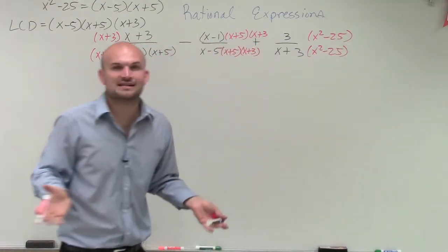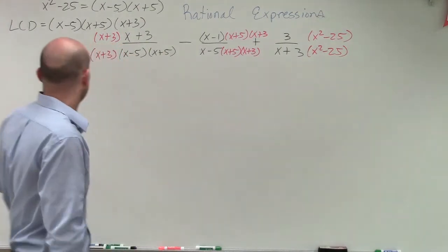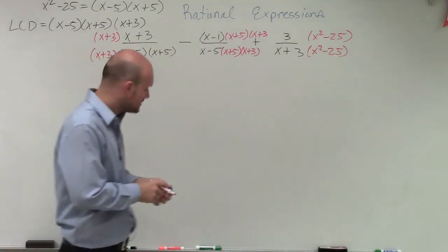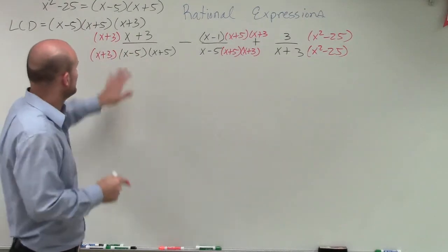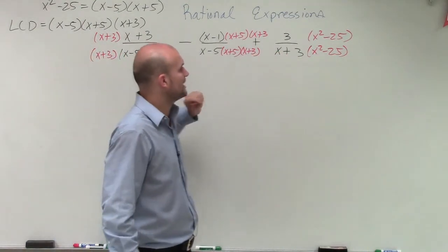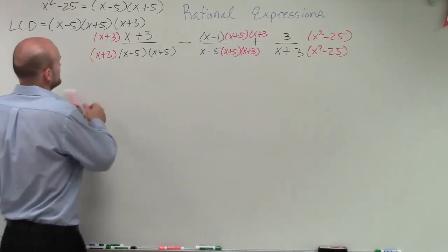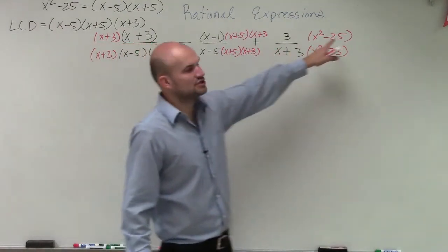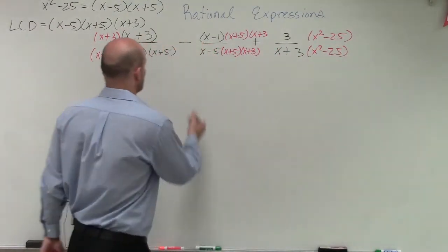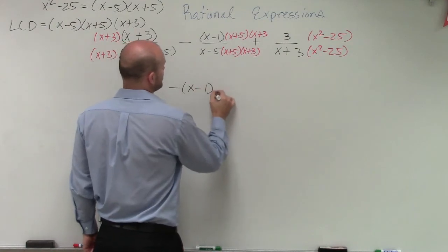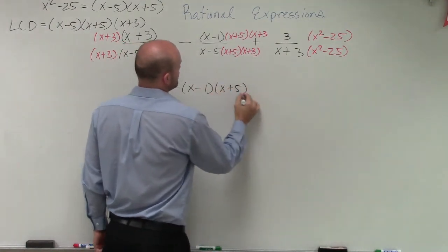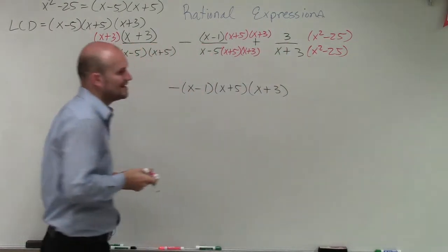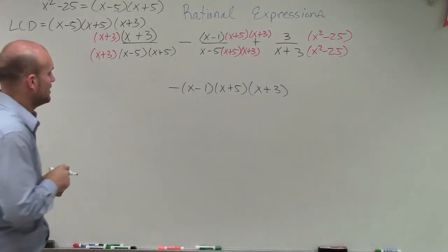We can write x minus 5 times x plus 5, but we already know when we multiply those out it gives us x squared minus 25. So now, by multiplying each of these, we're going to have our common denominator. The biggest challenge is multiplying all three binomials together, so I'm actually going to do this separately and then write down the answer.